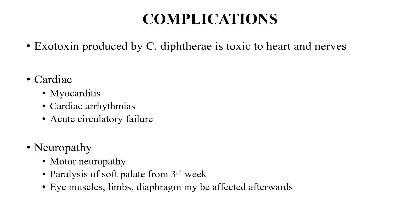Complications. The exotoxin produced by Corynebacterium diphtheriae is toxic to the heart and nerves. Cardiac complications include myocarditis, cardiac arrhythmias, or acute circulatory failure, all of which can lead to death. These cardiac complications usually appear within two weeks. Neuropathy appears in the third week; the patient may develop motor neuropathy, paralysis of the soft palate, paralysis of the eye muscles, or paralysis of the limbs or diaphragm.